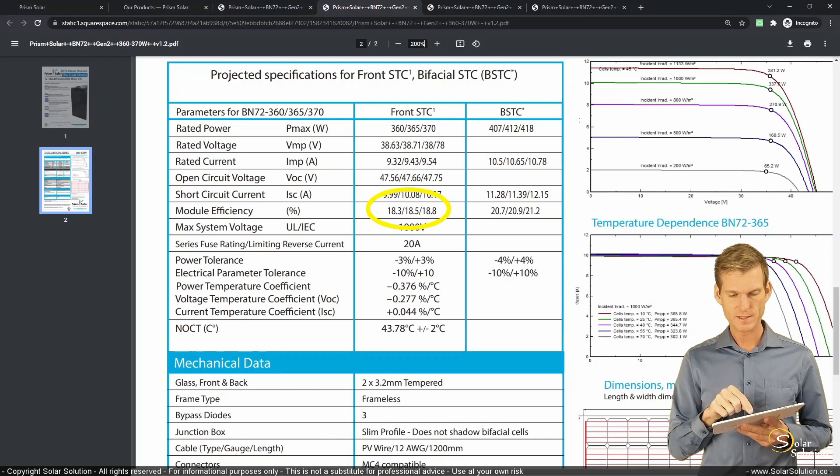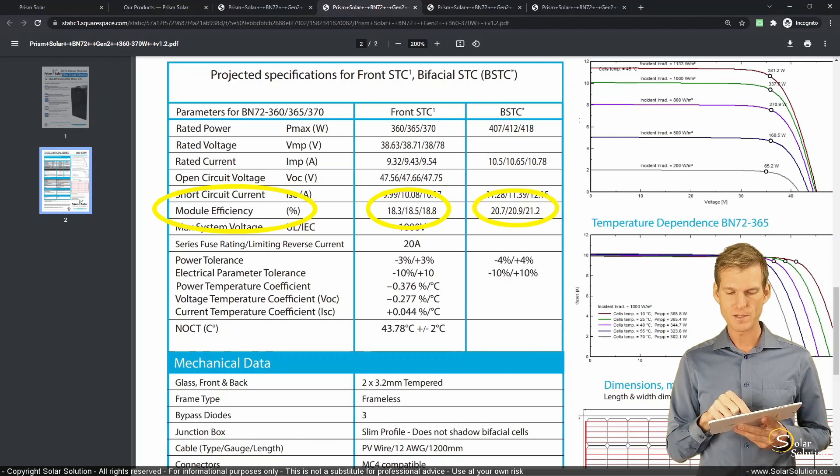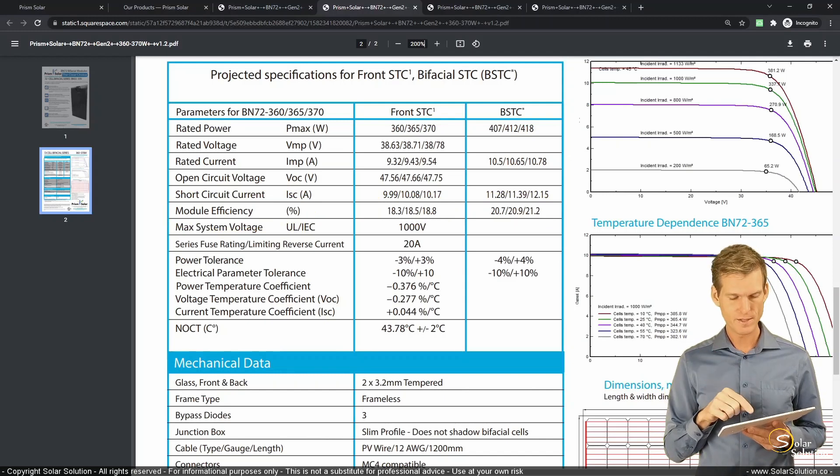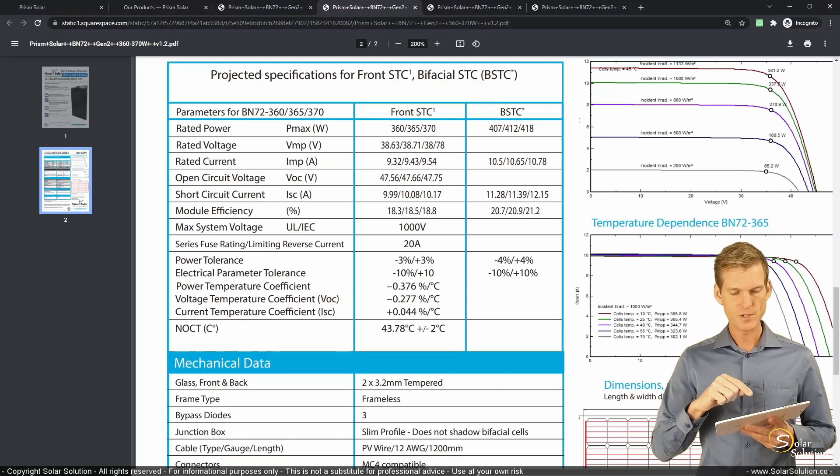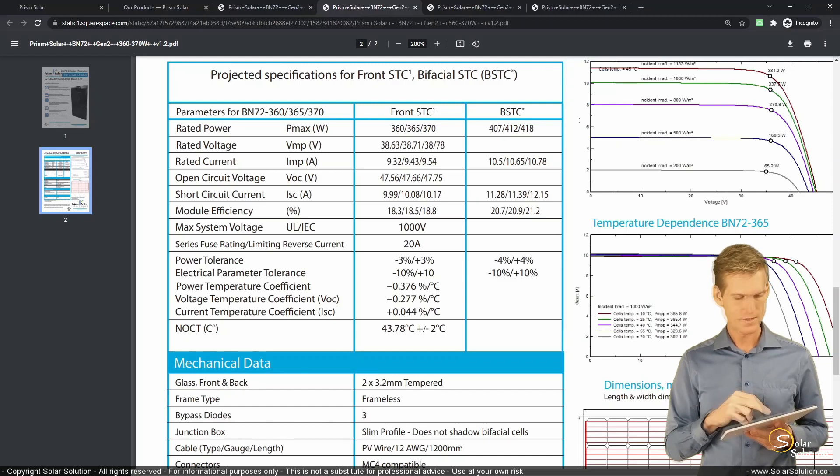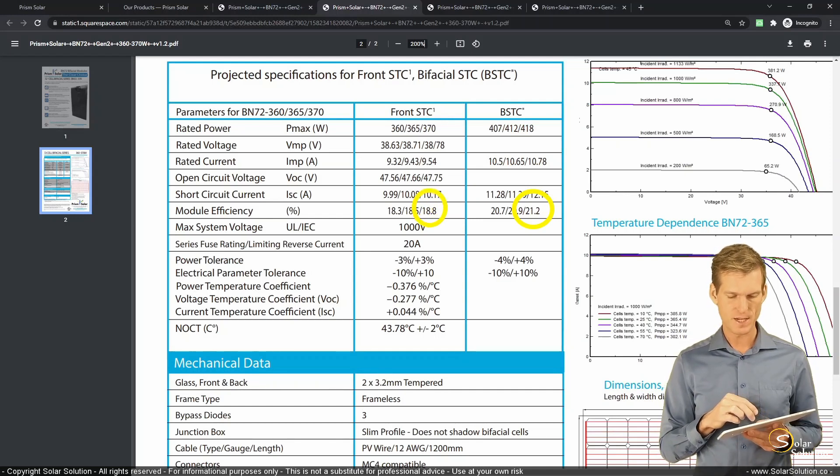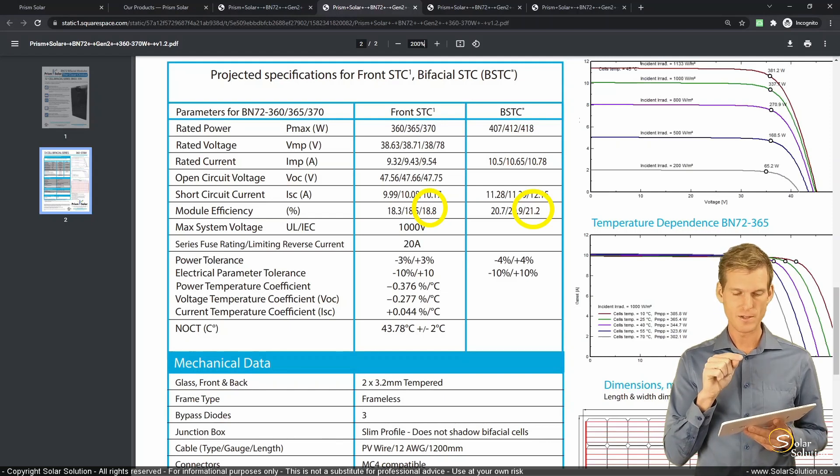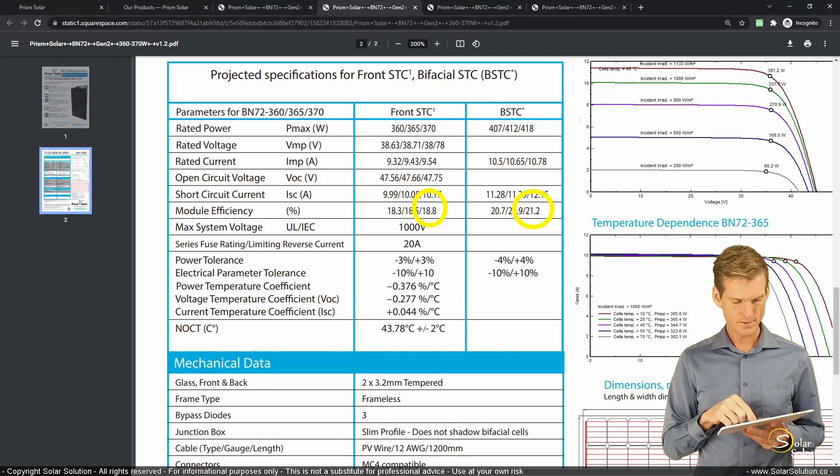And then you can see that they also test them under bifacial test conditions. And here you can see clearly that it's getting a higher power output as expected. So the one that normally produces 360 then produces 407. The one that produces 365 then produces 412, et cetera. And you can also see that in the column on the standard test conditions, the module efficiencies are somewhere in the 18% range: 18.3, 18.5, 18.8. And then as expected, you can see that the module efficiencies under bifacial standard conditions are higher: 20.7, 20.9, and 21.2. So to me, that's all clear. We can also do a quick comparison under these test conditions, the STC and the BSTC, what the actual increase in the overall module efficiency is. So when we take 21.2 and divide it by 18.8, multiply it by 100, then you get 12.8%, which tells me that under these test conditions we're getting 12.8% higher module efficiency due to the bifacial effect.